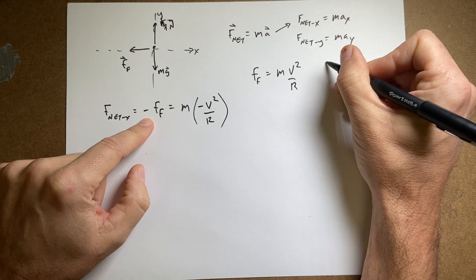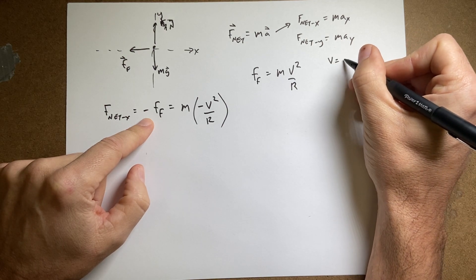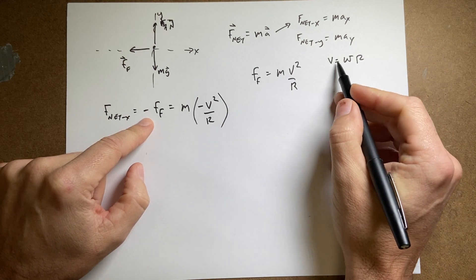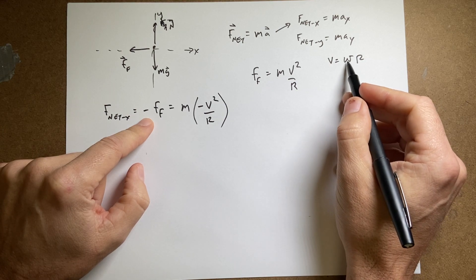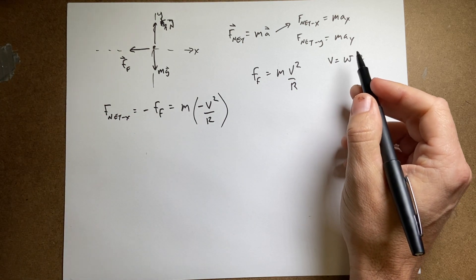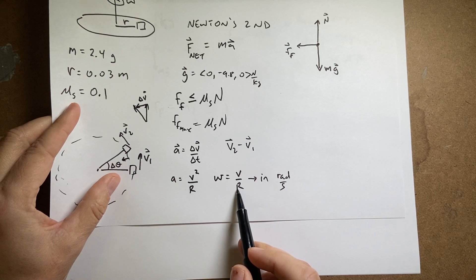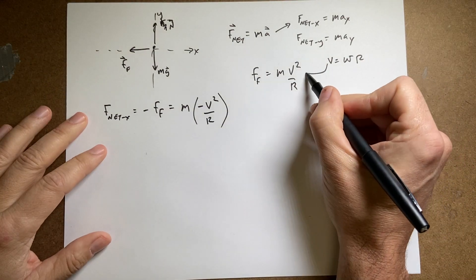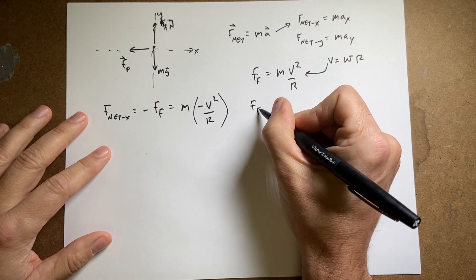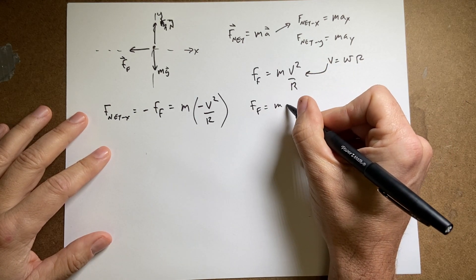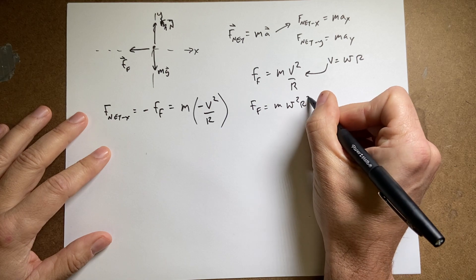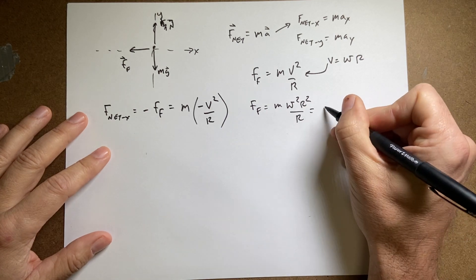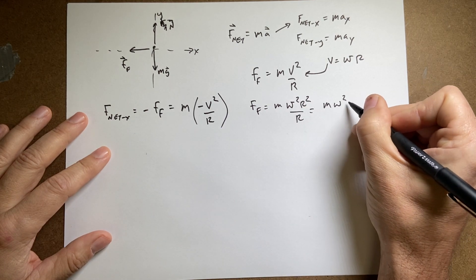And then I'm going to say v equals omega times r, right? If omega is v over r, v is, I can solve that. I can multiply both sides by r and I get v is omega r. And if I substitute this in, I get f friction equals m omega squared r squared over r equals m omega squared r.